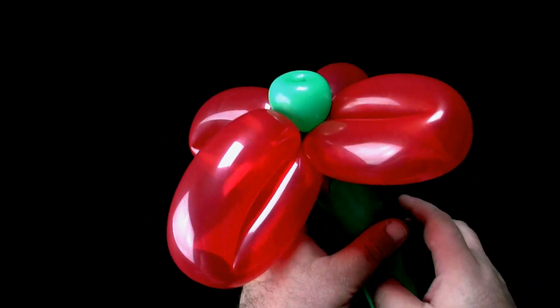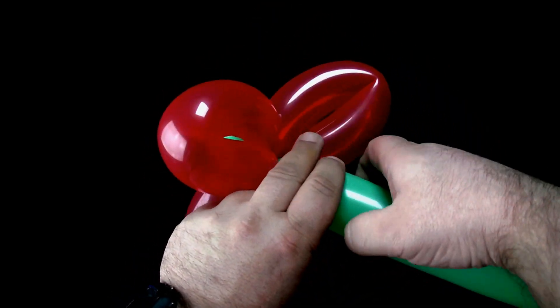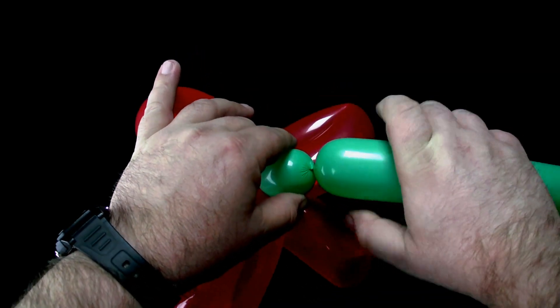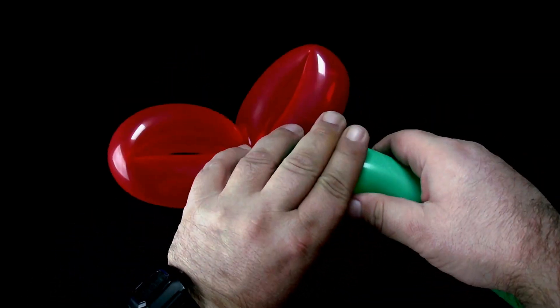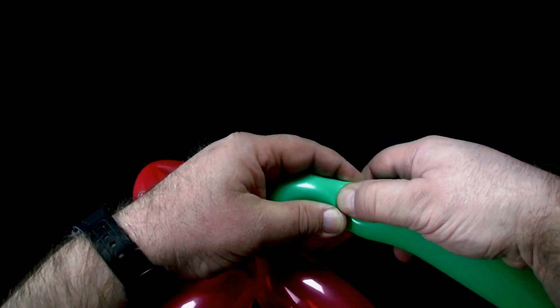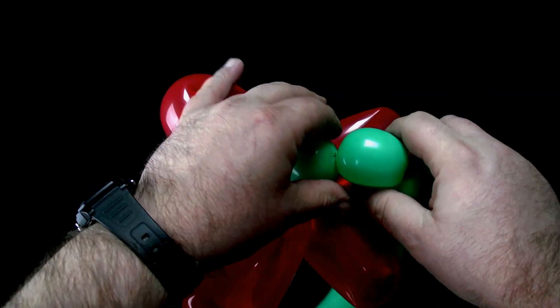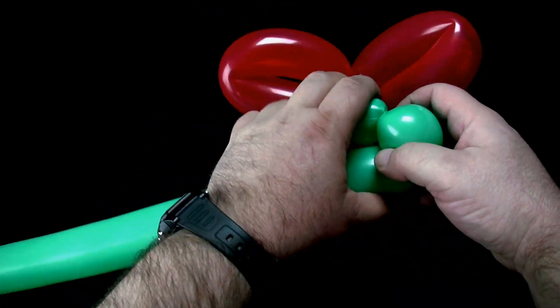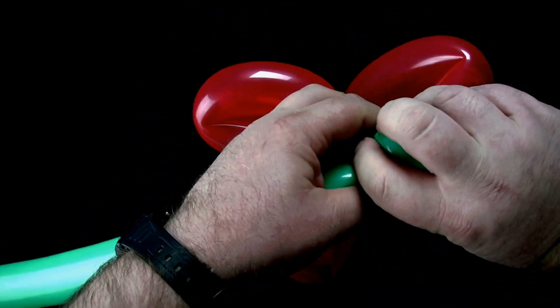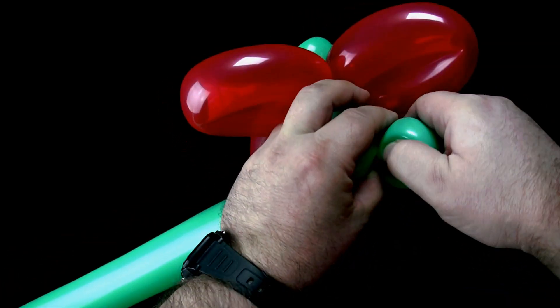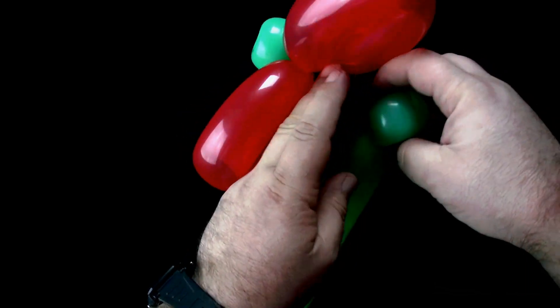Then make a two-finger bubble. Twist another two-finger bubble. And pinch twist it. This will put a 90-degree turn in the balloon.